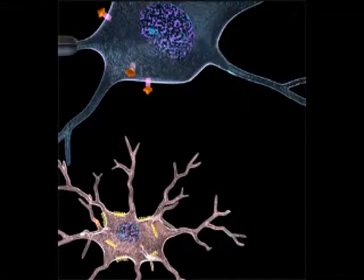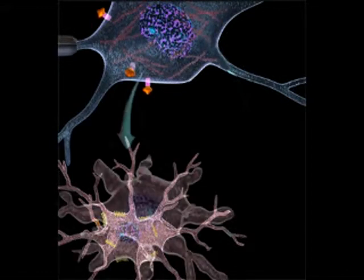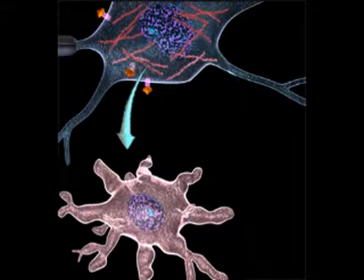Recently, a number of different studies have observed that tau aggregation seems to occur within neurons at the same time as microglia began to show activation within the brain. Activated microglia show shortened processes, swollen cell bodies, and increased expression of a variety of inflammatory molecules, including prostanoids, reactive oxygen species, and cytokines.